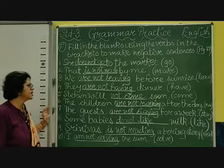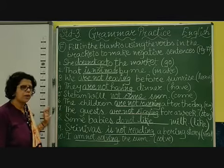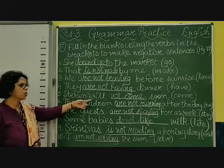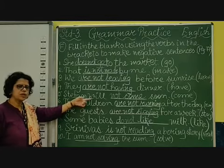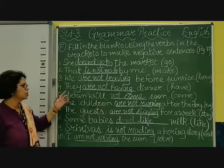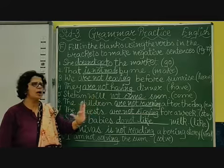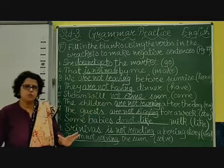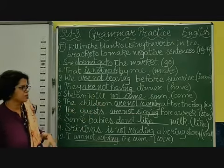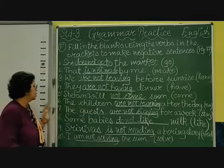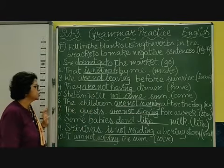Number five: 'Children will dash soon,' and the verb is 'come.' Since 'will' is already mentioned, indicating future tense, we just add 'not': 'Children will not come soon.' In future tense, it is 'will not come.'